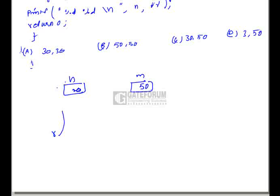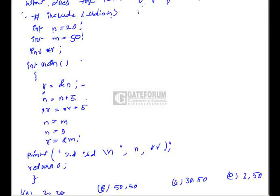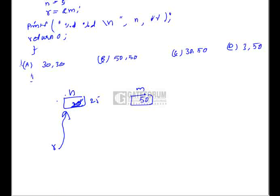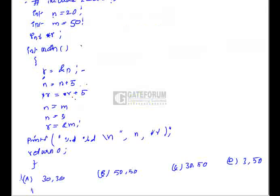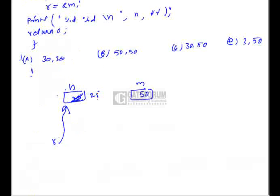So r points to the variable n, which in turn contains the value 20. Here n is increased by 5 and the result is stored in variable n, so n will become 25. Then the value at the address r will be increased by 5 and the result is pointed to by pointer variable r, so 25 will become 30 and r will be pointing to 30.